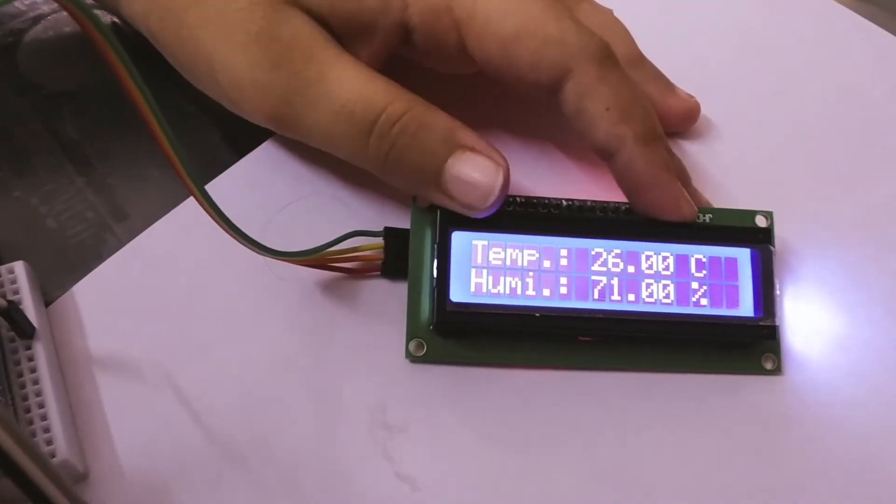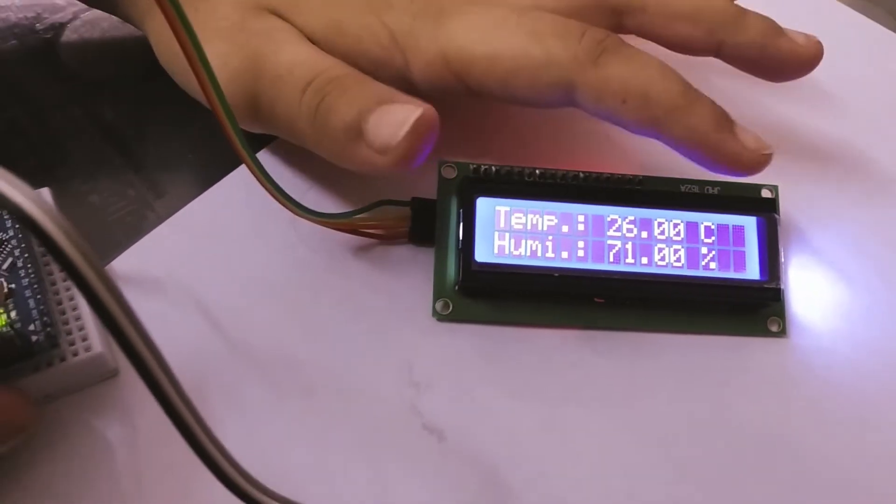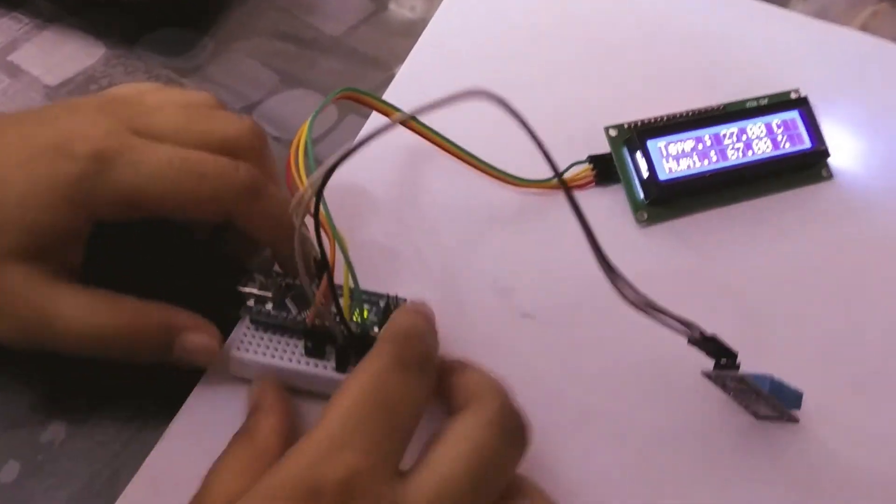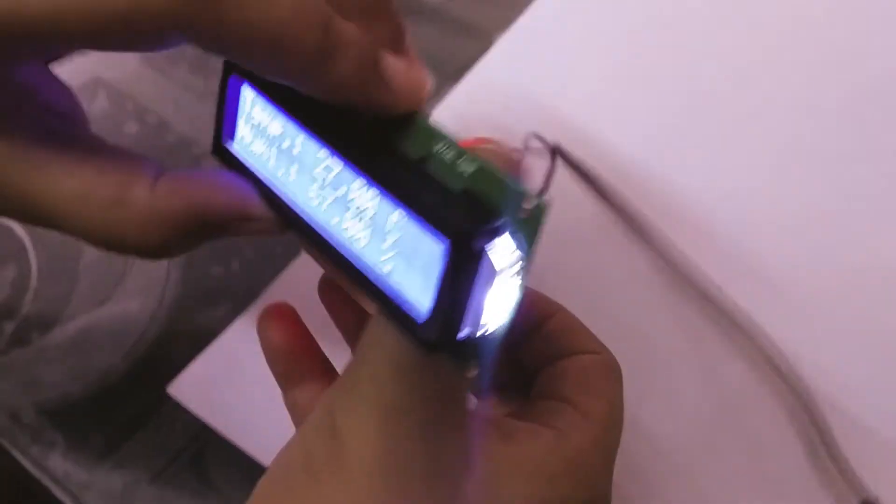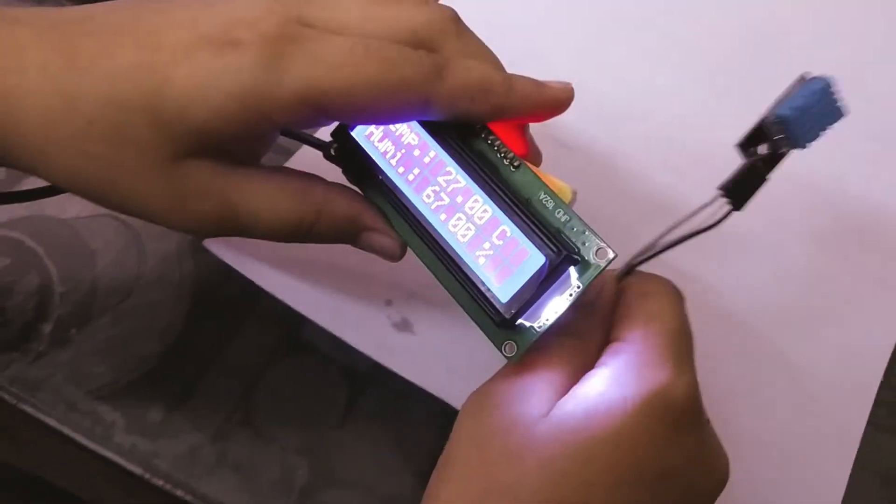So our temperature is 26 Celsius and humidity is 71%. You can just put it in a packet something like this and keep the temperature sensor outside so it can measure the temperature.